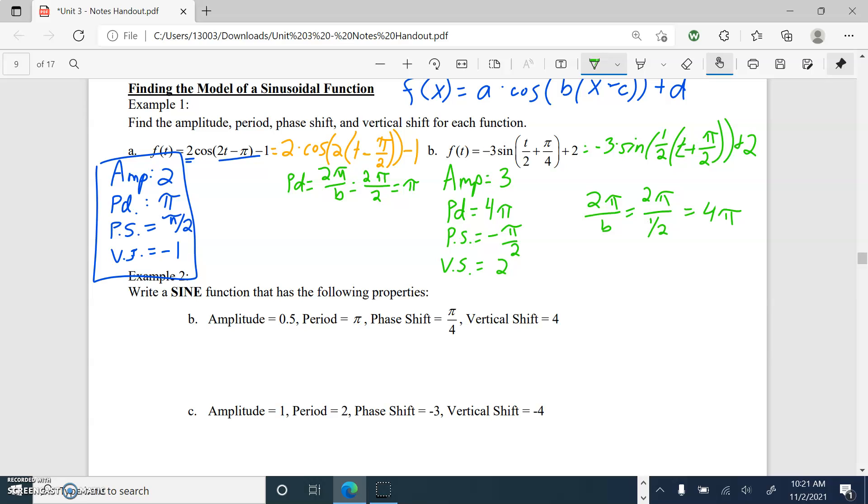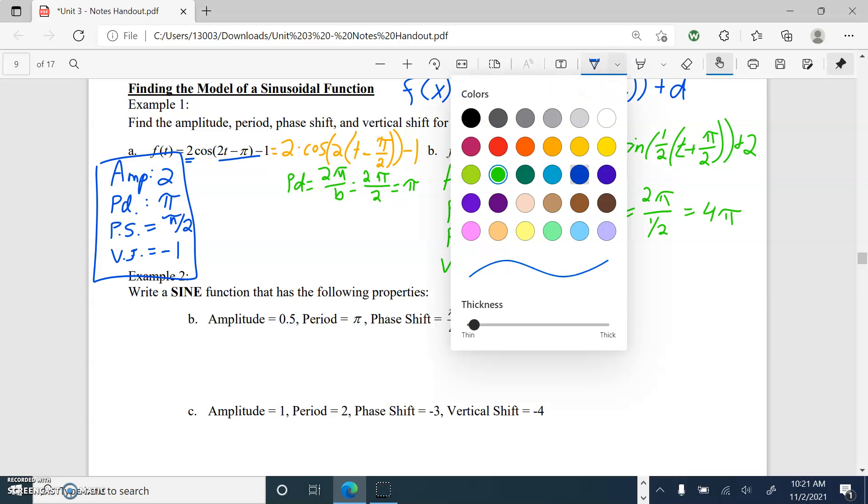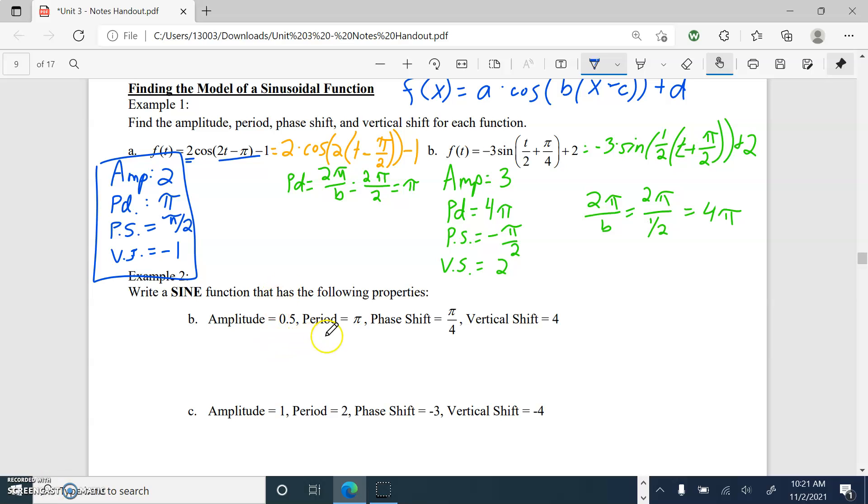So I would recommend a step-by-step process I use: if I'm being given the characteristics, the properties of those four pieces, I like to then take those and find the a, the b, the c, and the d of the equation, and then final step is to write the equation. So a equals, our amplitude is one half, so we would just write 0.5. Done. Easy enough.